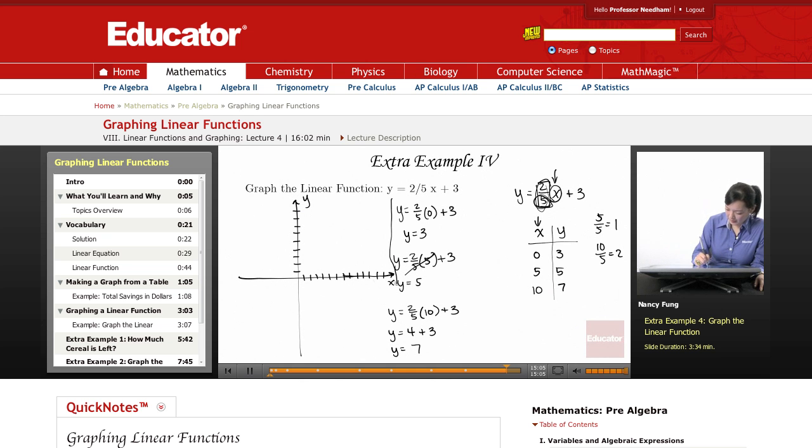So here is our graph. And we start off with 0, 3. Our next point is 5, 5. And so remember that once you have two points, you've really got all you need to create your line.